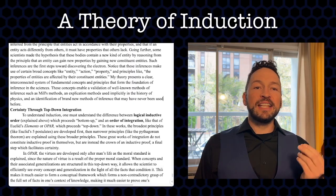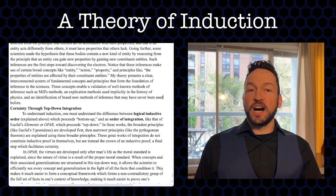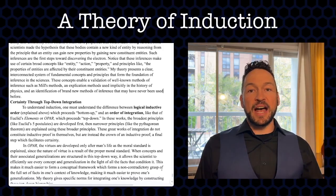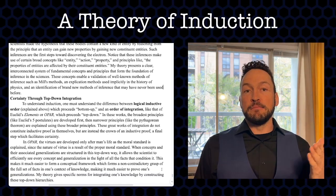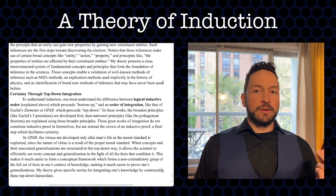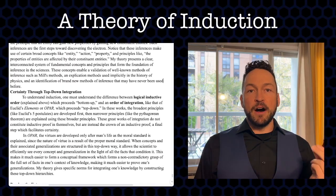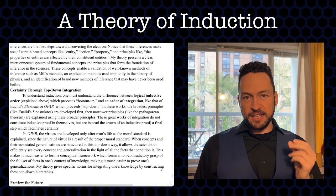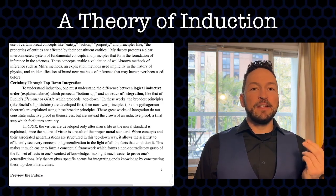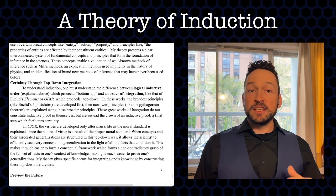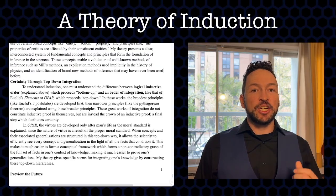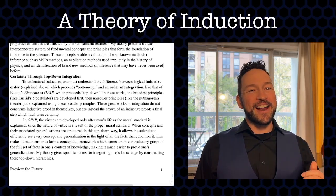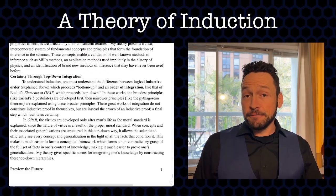Notice that these inferences make use of broad concepts like entity, action, and property, as well as principles such as 'the properties of entities are affected by their constituent entities.' My theory gives a clear, interconnected system of fundamental concepts and principles of this kind, forming the foundation of inferences in the sciences. These concepts and principles enable a validation of well-known methods of inference such as Mill's methods, an explication of methods used implicitly in the history of physics, and the identification of brand new methods of inference.